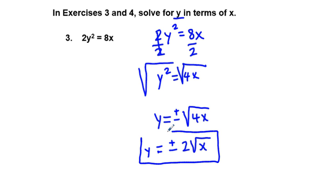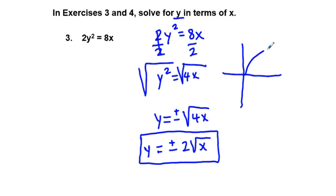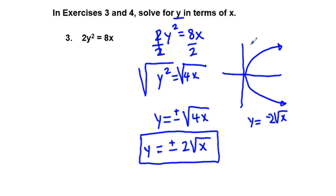This, in pre-calculus, is a sideways opening parabola. The positive part, y equals 2 square root of x, would be a square root type function on its own. With the negative, we complete the parabola: the bottom half is y equals negative 2 square root of x, and the top half is y equals 2 square root of x. That's how we get our sideways opening parabola.